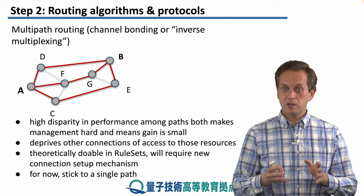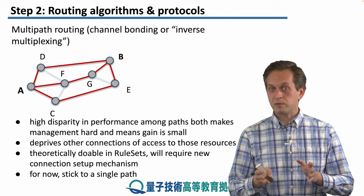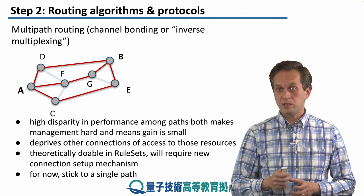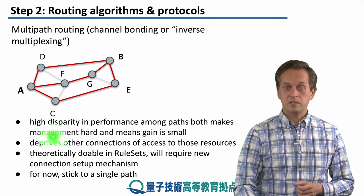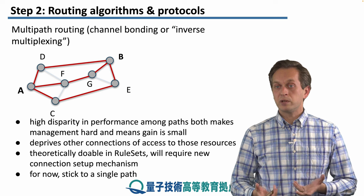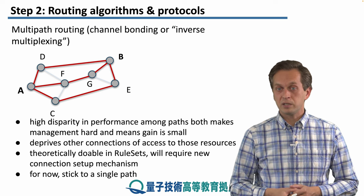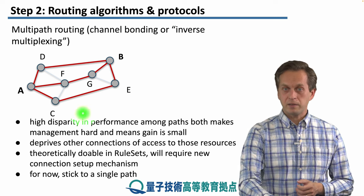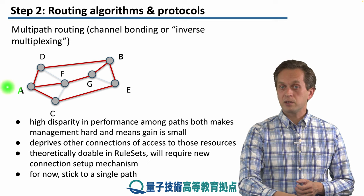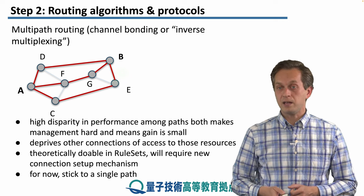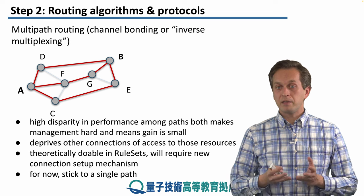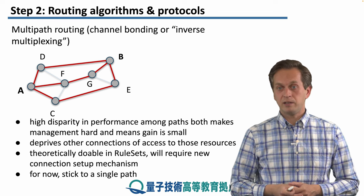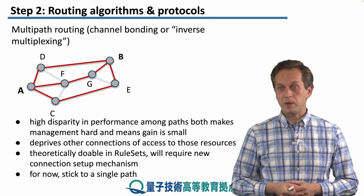If we reserve all these different paths for a single connection, we deprive other connections of access to those resources. For example, C and E might wish to engage in QKD entanglement but cannot, because their link is being used for the A–B connection. Again, theoretically we can handle all of these things inside rule sets, but they will definitely require some new connection setup mechanisms.